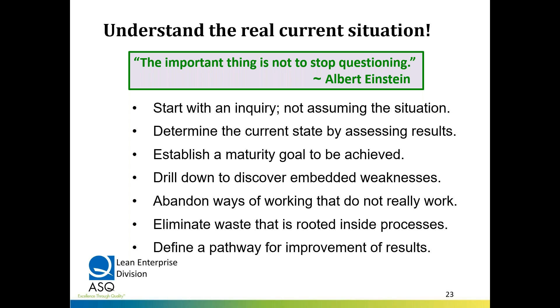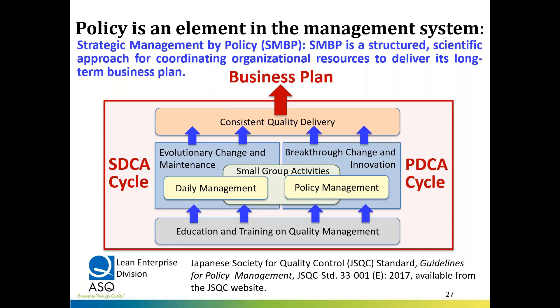This SMBP process — strategic management by policy — is a structured scientific approach for coordinating operational resources to achieve long-term delivery. We see education on quality management, small group activities for daily management with evolutionary change, and small group activities for policy management — the projects we're doing, like a Hoshin Kaizen or Kaizen Kanri type of project. A Kanri project is done within a function; Hoshin projects are done cross-functionally for the whole organization, giving us breakthrough changes and innovation. Out of this we get the business plan: the SDCA cycle combined with the PDCA cycle drives the business plan, and all three have to be integrated.